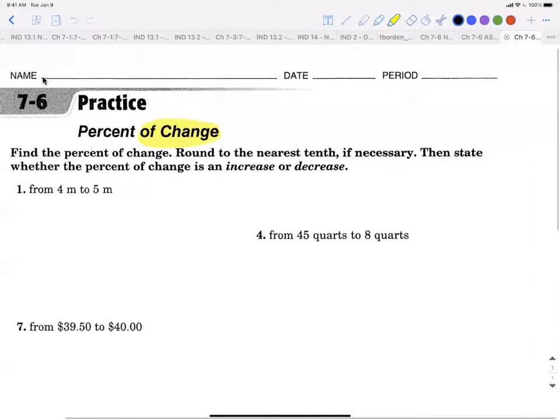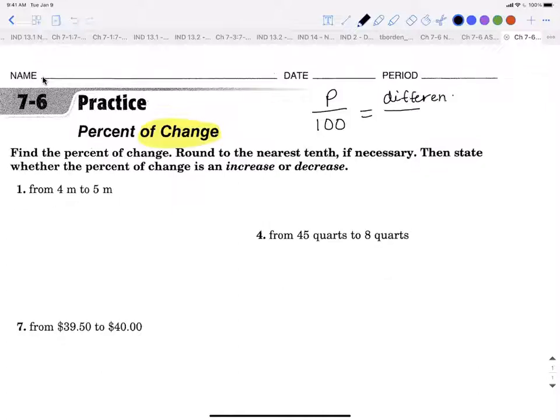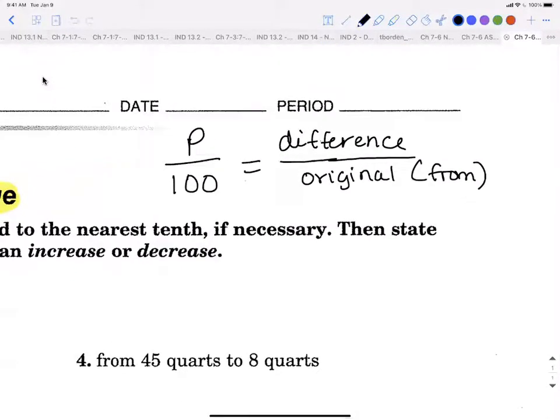So this formula should look very familiar, and again, I hope you can connect that from and of, you just replace of with from. But the formula that we're going to use is still our percentage over 100. And then we're looking for the difference over the original. And our original is always going to be the from.